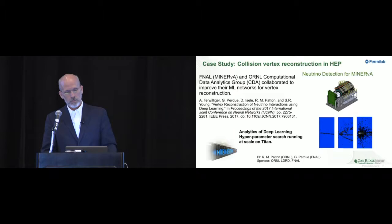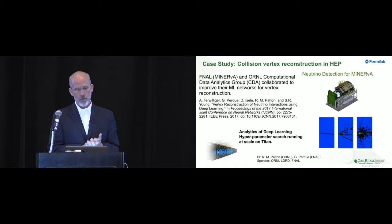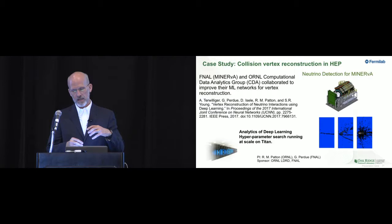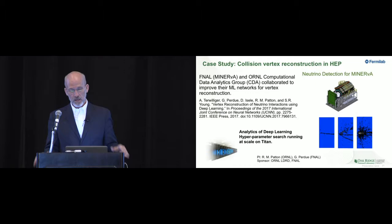Another case study comes from Fermi National Accelerator Facility and a particular neutrino experiment called MINERvA. Collaborators from Fermi and Oak Ridge improved Fermilab's machine learning networks for vertex reconstruction—where the tracks indicating the path of particles inside the detectors need to be classified. This is an image classification problem in three dimensions that needs to be done very rapidly and at scale.